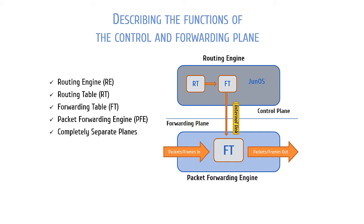What this means to you as an engineer is if for some reason your Junos device starts getting bogged down with large amounts of traffic, or a configuration is implemented that is having an unintended consequence, you should always be able to reach the device and make configuration changes. The control plane should not be affected by excessive loads in traffic to the point that you can no longer manage the device.